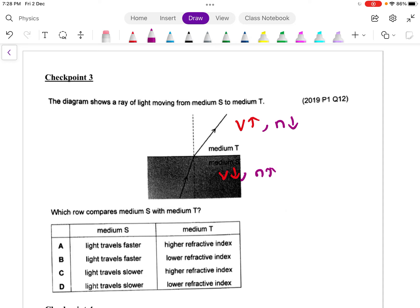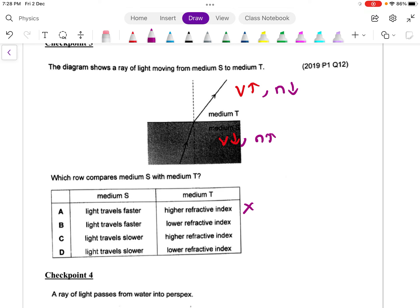Option A, light travels faster in S - this is wrong. Part B, light travels faster in S - also wrong. For part C, light travels slower, this is correct. Now after that, for medium T, higher refractive index - this is wrong. So next thing is definitely the last part. Medium S, light travels slower, T has a lower refractive index. So the answer should be D.